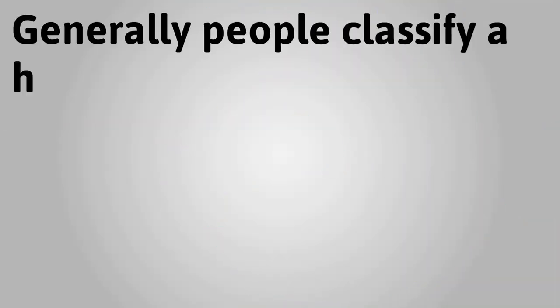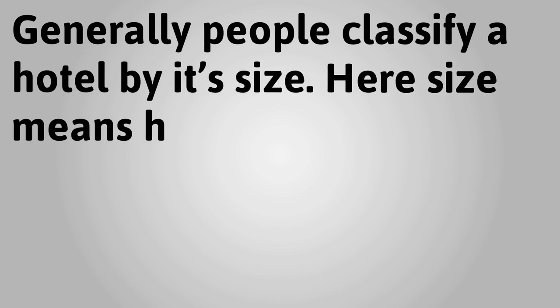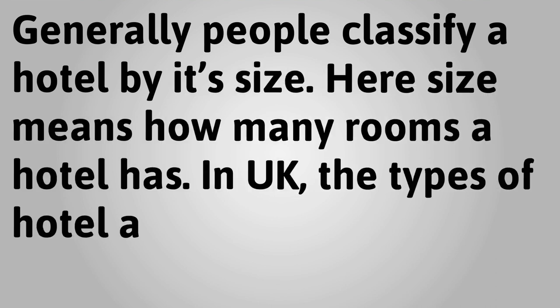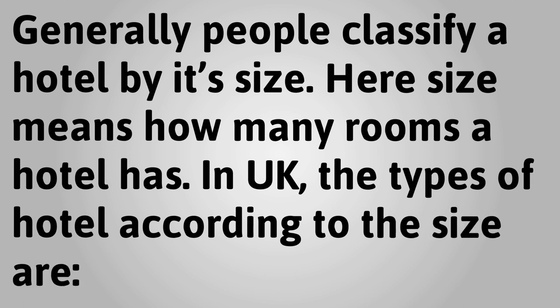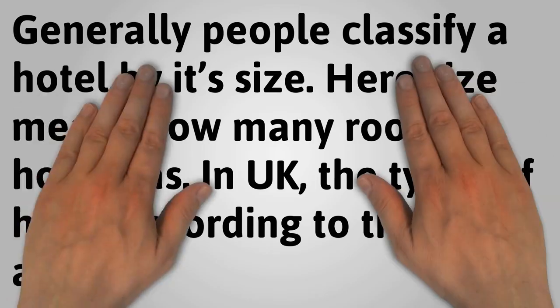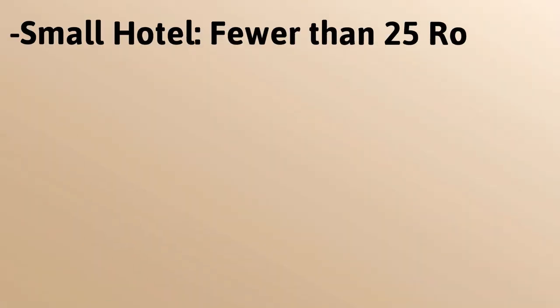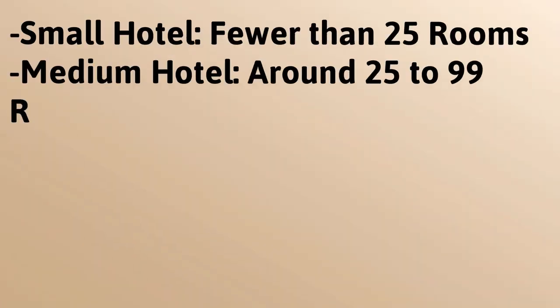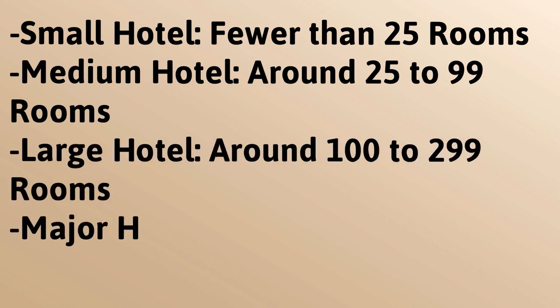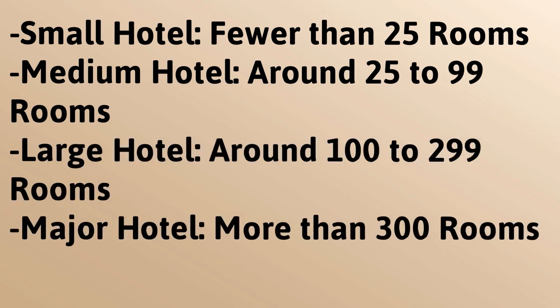Generally, people classify a hotel by its size. Here, size means how many rooms a hotel has. In the UK, the types of hotel according to size are: Small hotel — fewer than 25 rooms; Medium hotel — around 25 to 99 rooms; Large hotel — around 100 to 299 rooms; Major hotel — more than 300 rooms.